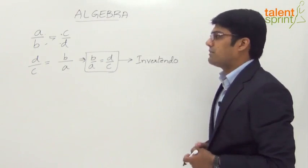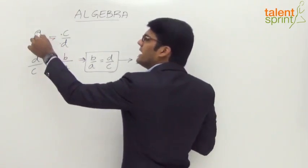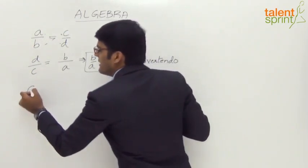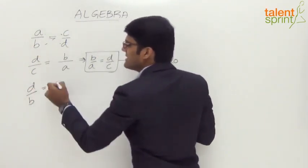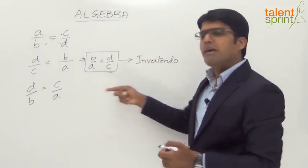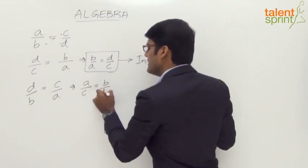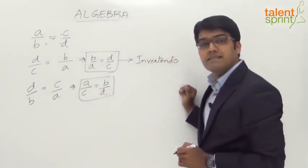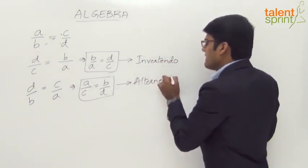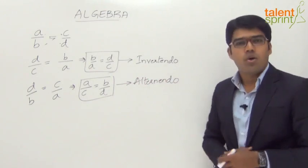Let us try a different operation. Let us take a to the denominator of the second fraction and d to the numerator of the first fraction. We get d by b equals c by a, or equivalently, a by c equals b by d. This is known as alternendo — we are alternating the numerators and denominators of the opposite fractions.